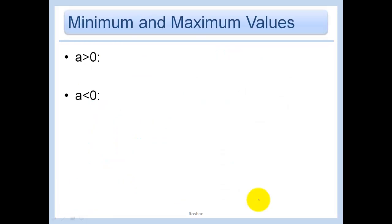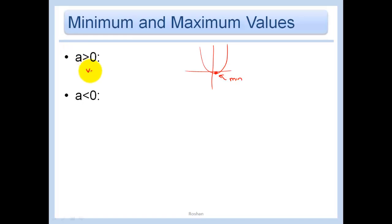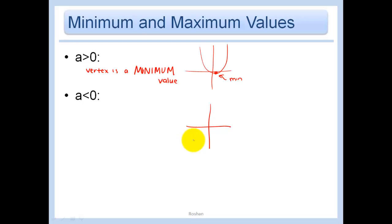Regarding minimums and maximums: if a is greater than 0, the graph opens up, so the vertex is a minimum value. Conversely, if a is less than 0, the parabola opens down, and the vertex is the maximum value.